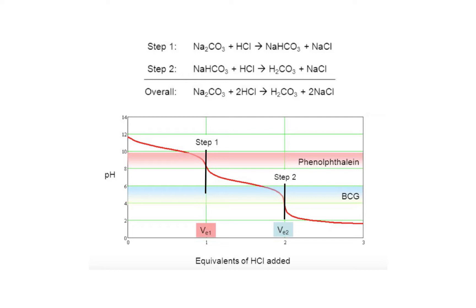The acid-base reaction between sodium carbonate and hydrochloric acid is stepwise. In the first step, we will use the indicator phenolphthalein to monitor the formation of sodium bicarbonate. In the second step, a second equivalent of HCl reacts with bicarbonate to yield carbonic acid. This step is monitored with bromocresol green as an indicator.